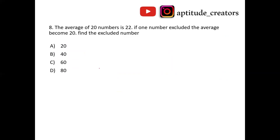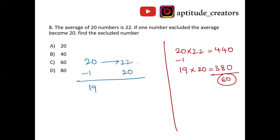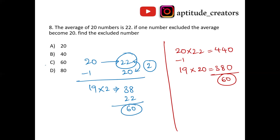The average of 20 numbers is 22. If one number is excluded, the average becomes 20. Find the excluded number. Traditional method: sum of 20 numbers is 22 × 20 equals 440. After excluding one, 19 numbers with average 20: 19 × 20 equals 380. Excluded number is 440 minus 380 equals 60. Answer is option C, 60.